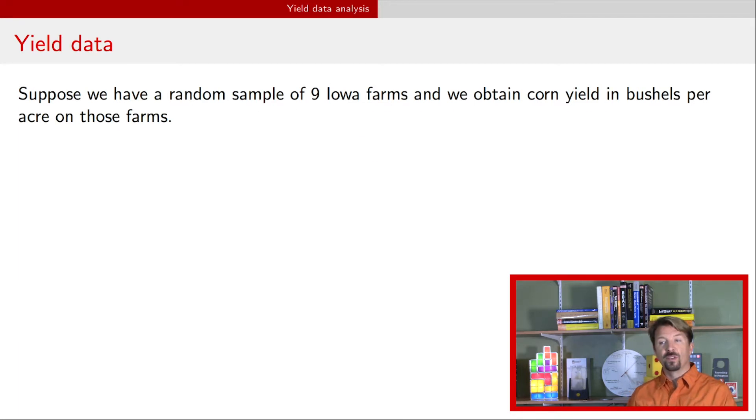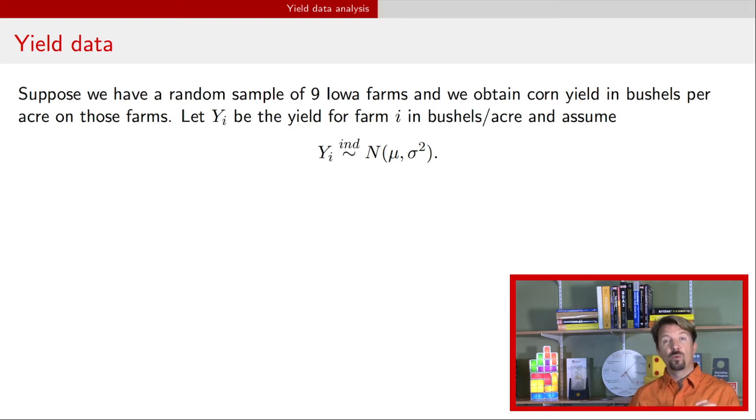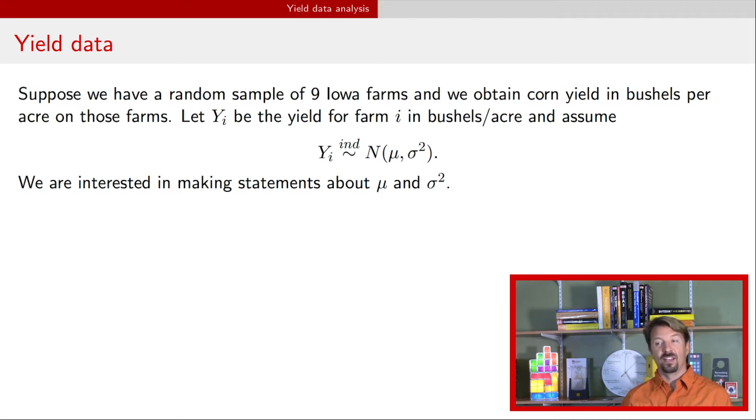Now, we're going to assume that that yield, which we're going to denote yi, has a normal distribution with a common mean μ and variance σ², and that all the observations are independent. And what we're interested in doing right now is making statements about μ, that is the population mean yield across Iowa, and σ², the population variance in yield in Iowa. And at the end, we're also going to be talking about the standard deviation, σ.